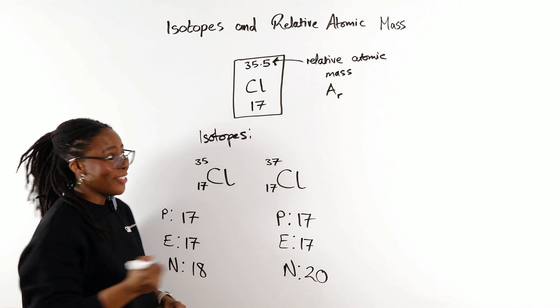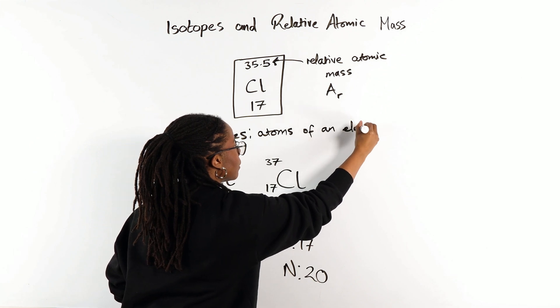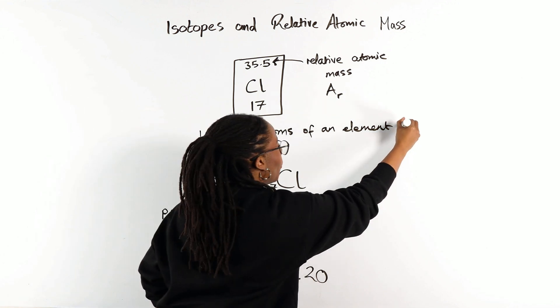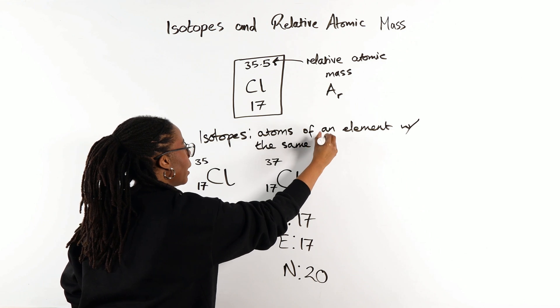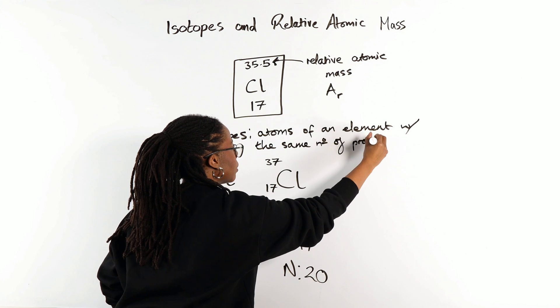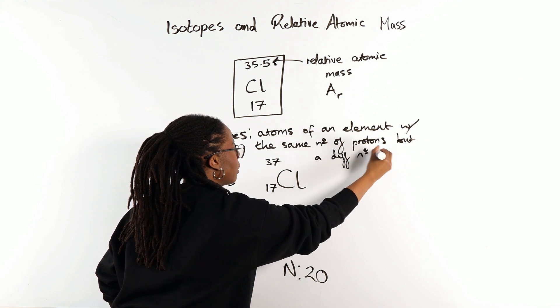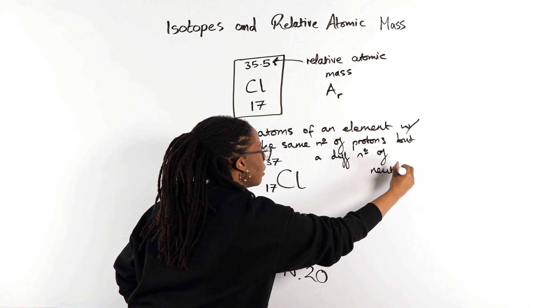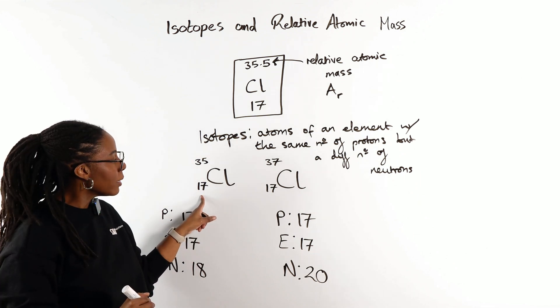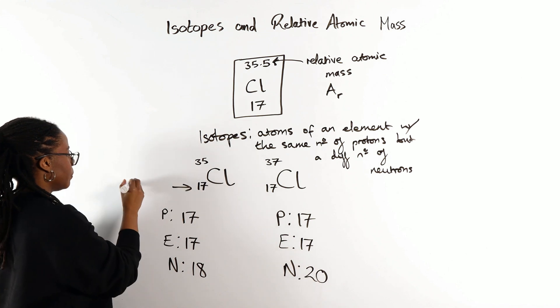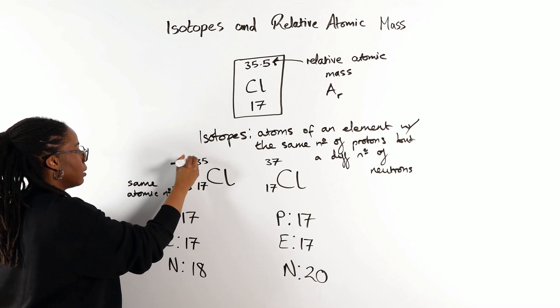Which by definition are atoms of an element with the same number of protons, but a different number of neutrons. Or thinking of it in terms of these two values, we can say they have the same atomic number, but different mass numbers.